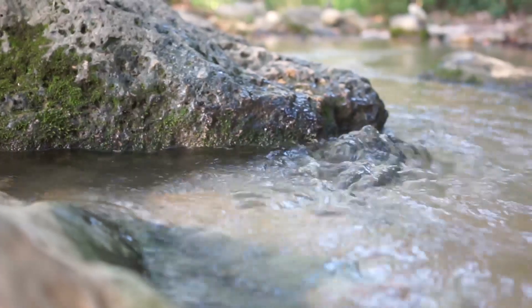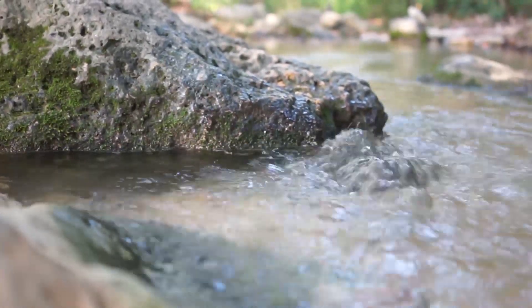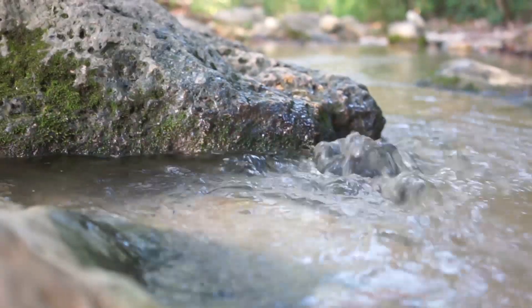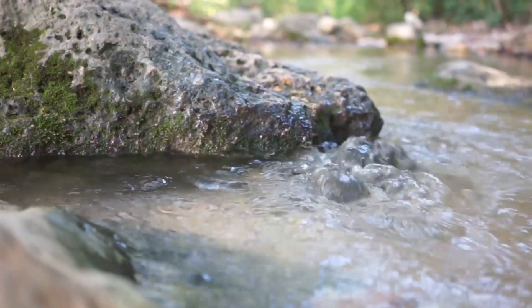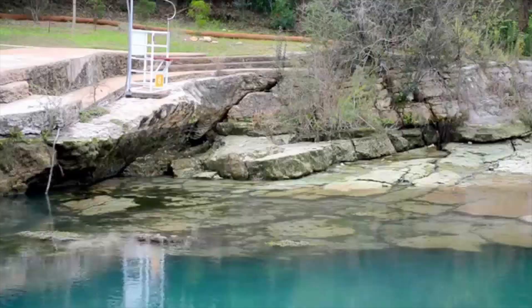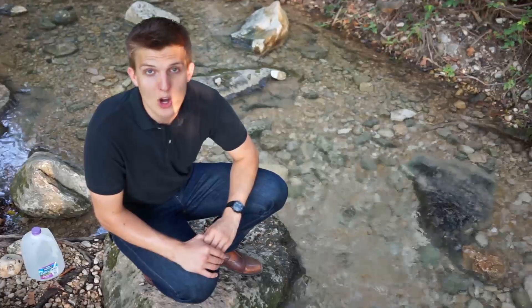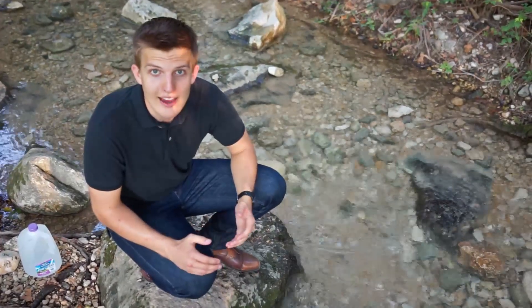Hydrogeologists use the terms recharge and discharge to describe how water enters and leaves an aquifer. One way an aquifer can discharge is through a spring. Springs occur when the water table intersects the land surface. The Barton Springs pool is fed by this spring here. Notice the large fracture which the water flows out of. Here, at Upper Barton Spring, water is flowing out of the ground from a karst aquifer, or small caves.